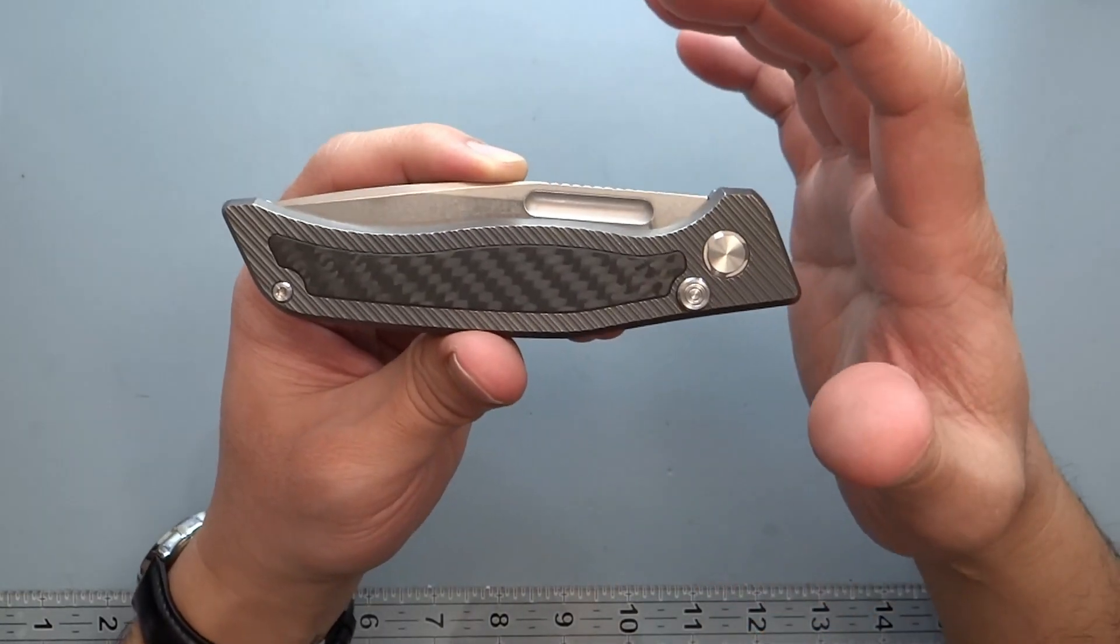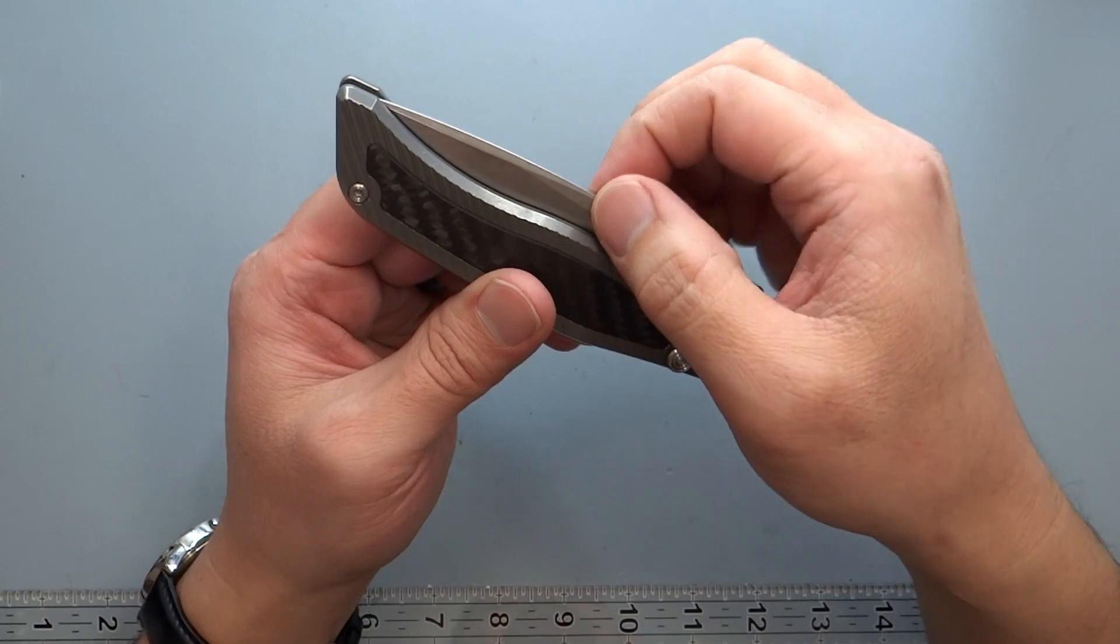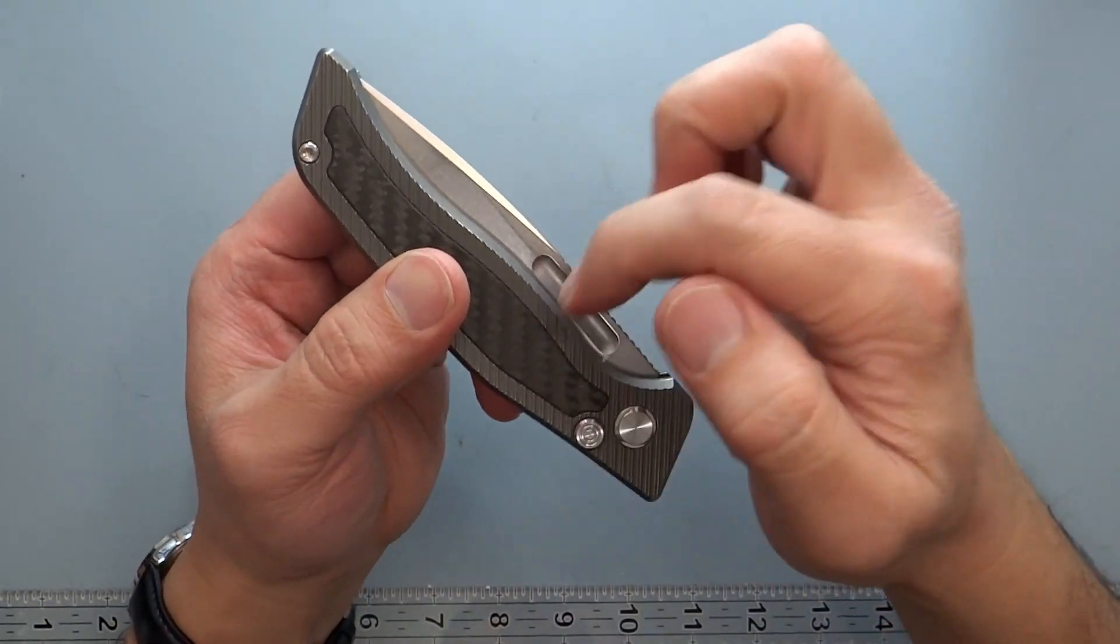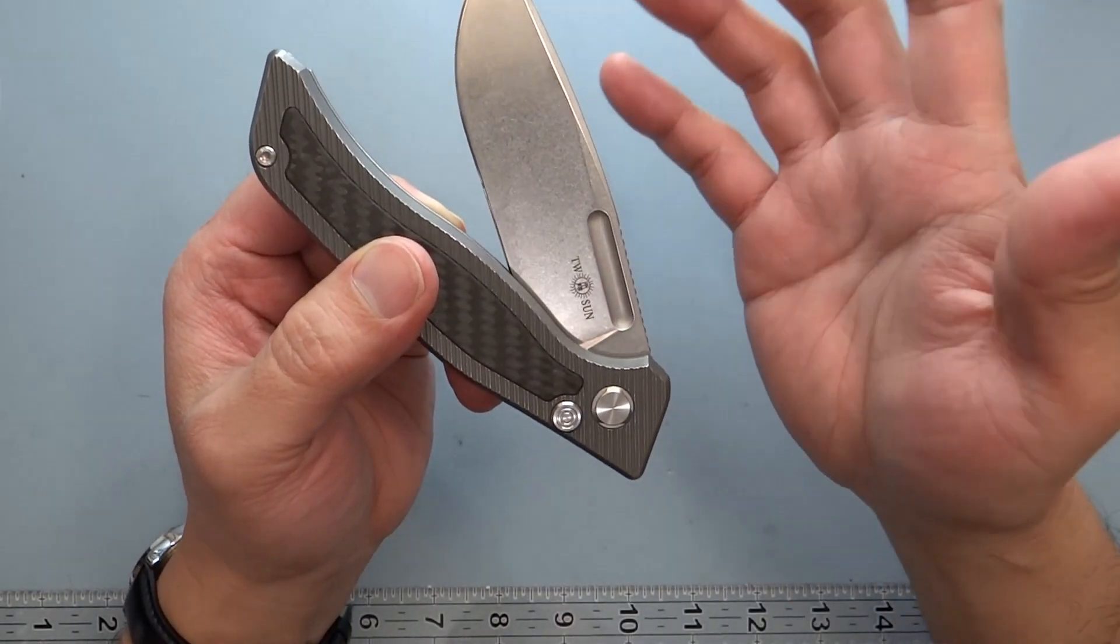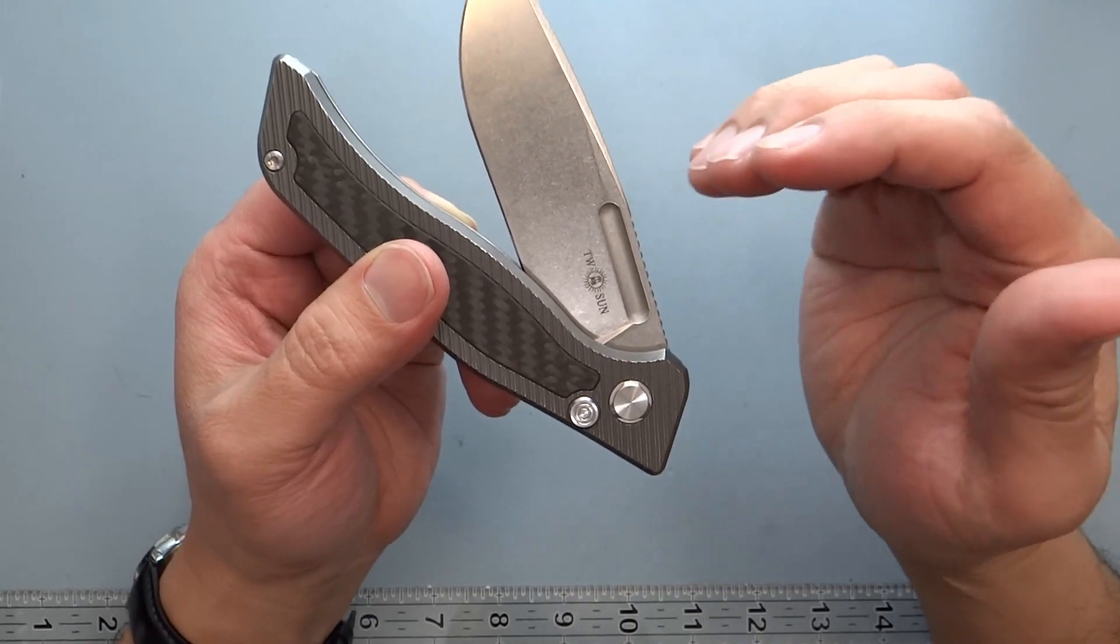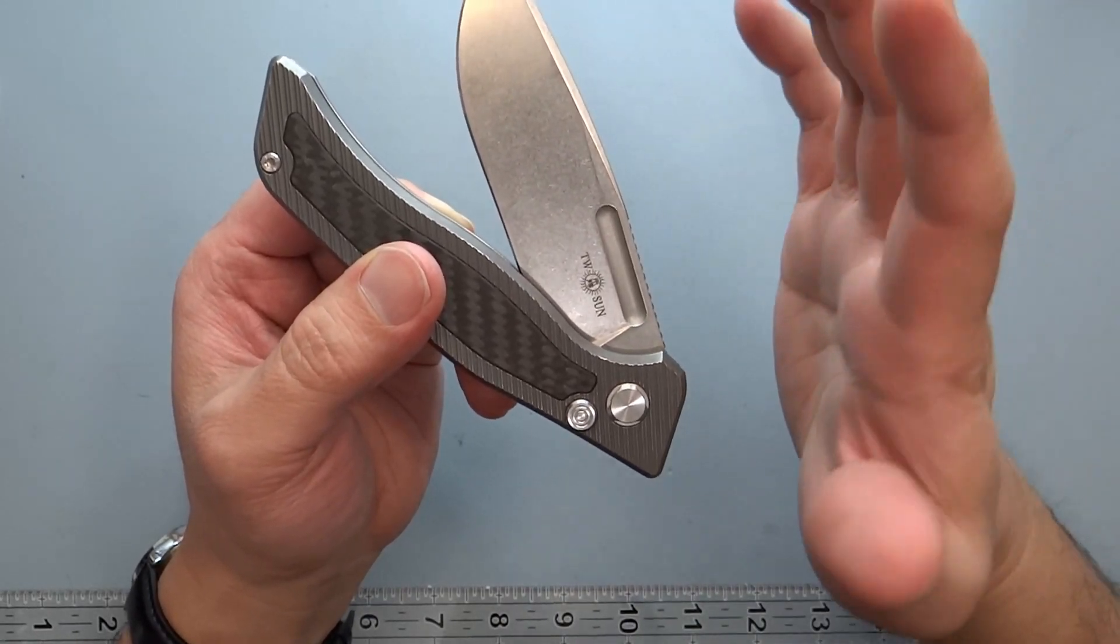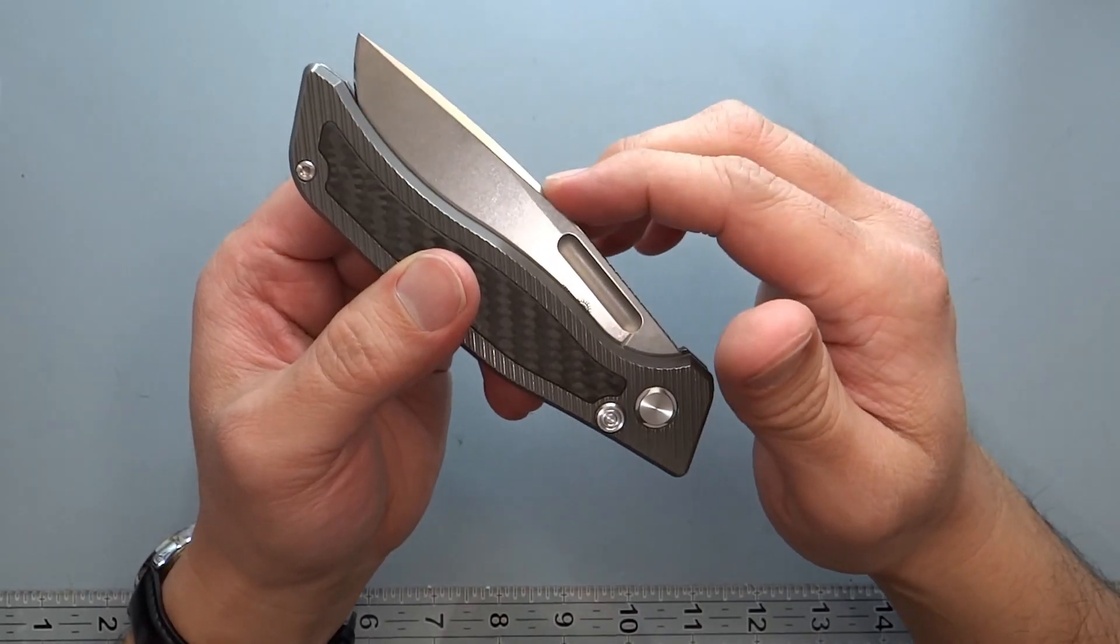This sees only about one pound deployment using an alignment pull gauge. That's pretty low for most knives. Most thumb stud knives are about two pounds. Flipper tab knives are normally around three pounds of pull before it actually breaks. So that's on the low side for that.